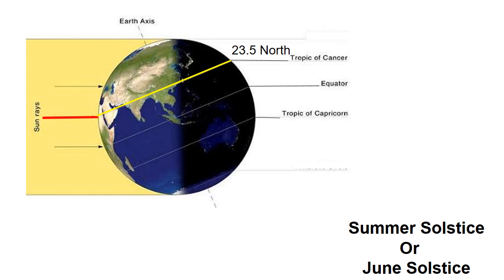The June solstice usually occurs around June 20th or 21st. It is the longest day of the year, which occurs when the sun is directly overhead at the Tropic of Cancer. At this time, the sun is at its highest point in the sky and the day has the most hours of daylight.